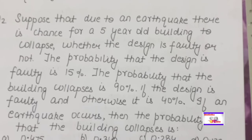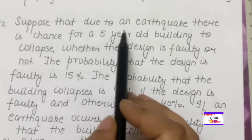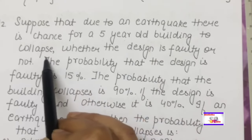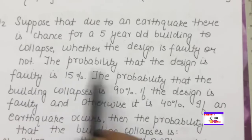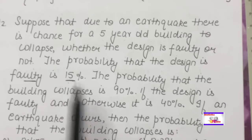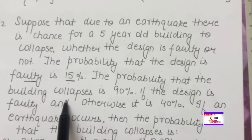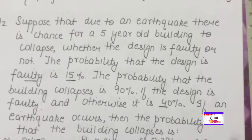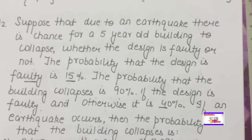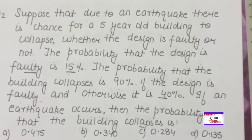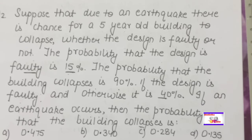Next question: suppose that due to an earthquake there is a chance for a five-year-old building to collapse, whether the design is faulty or not. The probability that the design is faulty is 50%. The probability that the building collapses is 90% if the design is faulty, and 40% otherwise. If an earthquake occurs, find the probability that the building collapses. For this type of problem, we use Bayes' rule.